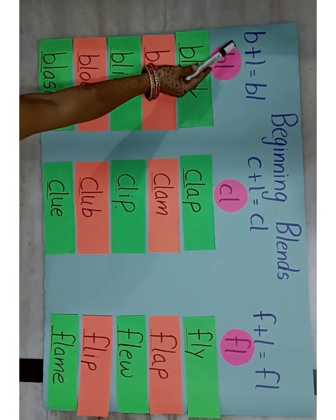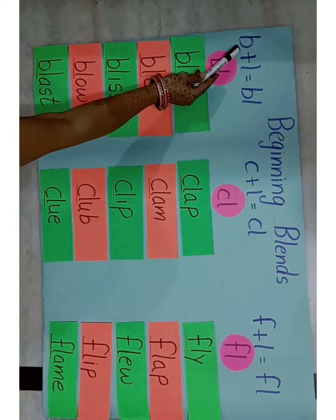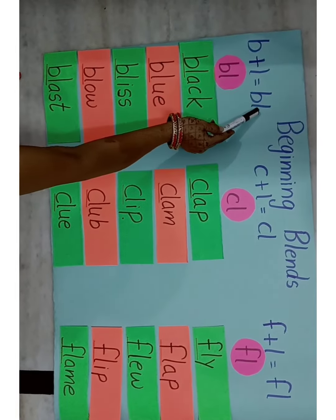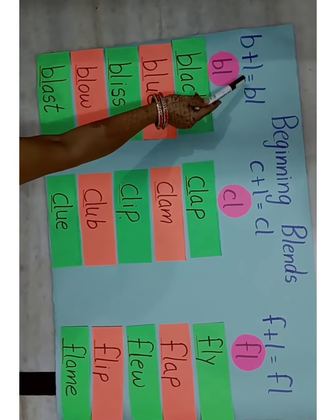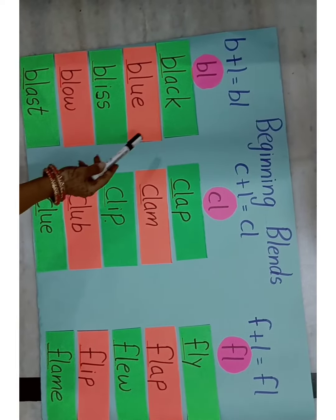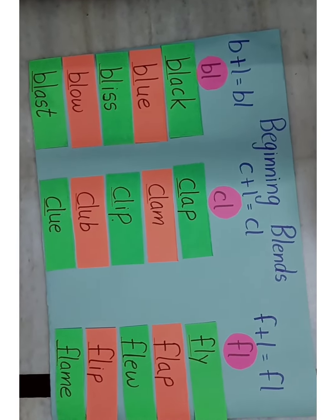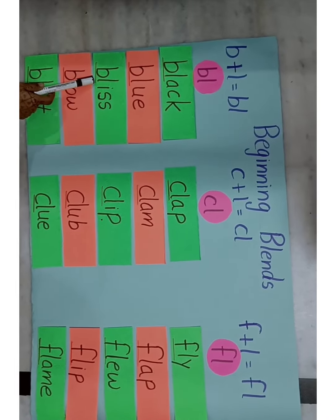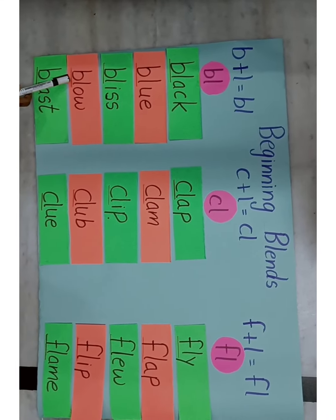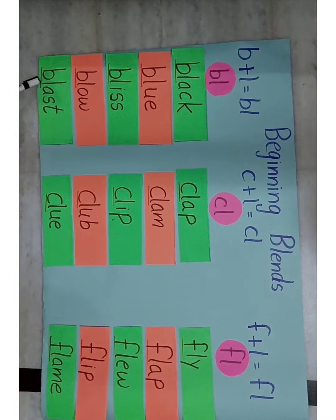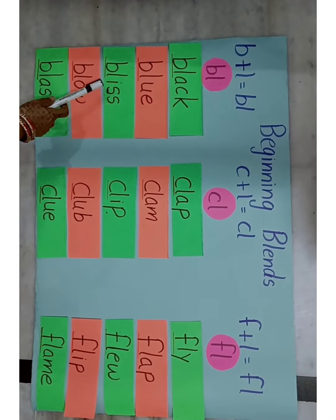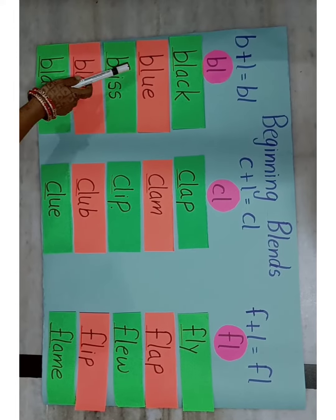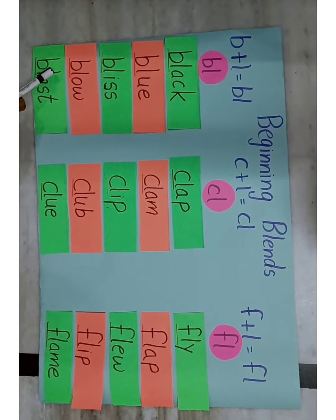You can see here I have written two letters: B and L. When we join them, the sound will be BL. Here I have written a few words that start with BL. Everywhere you can see the BL blend. I have underlined the BL blend in every word.